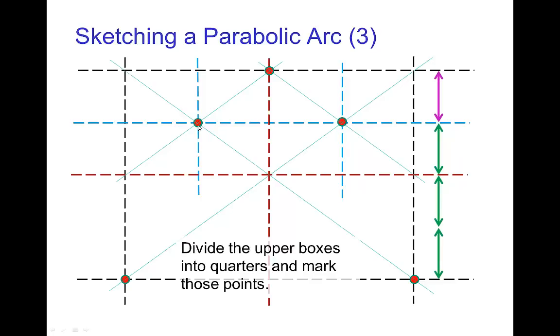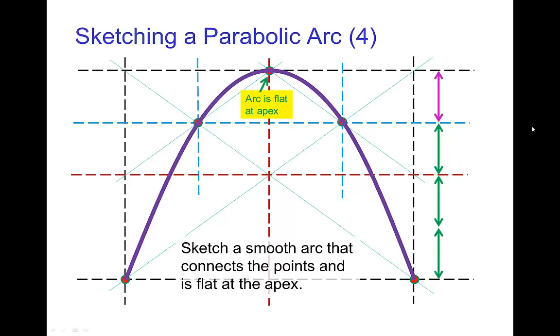It should be a quarter of the way down vertically. And of course it's the same for the point on the other side of the apex between the start and the apex. Well now we're basically done because all we have to do is sketch a smooth curve that connects those points. You want to make sure it's flat at the top, and there's your parabolic arc.